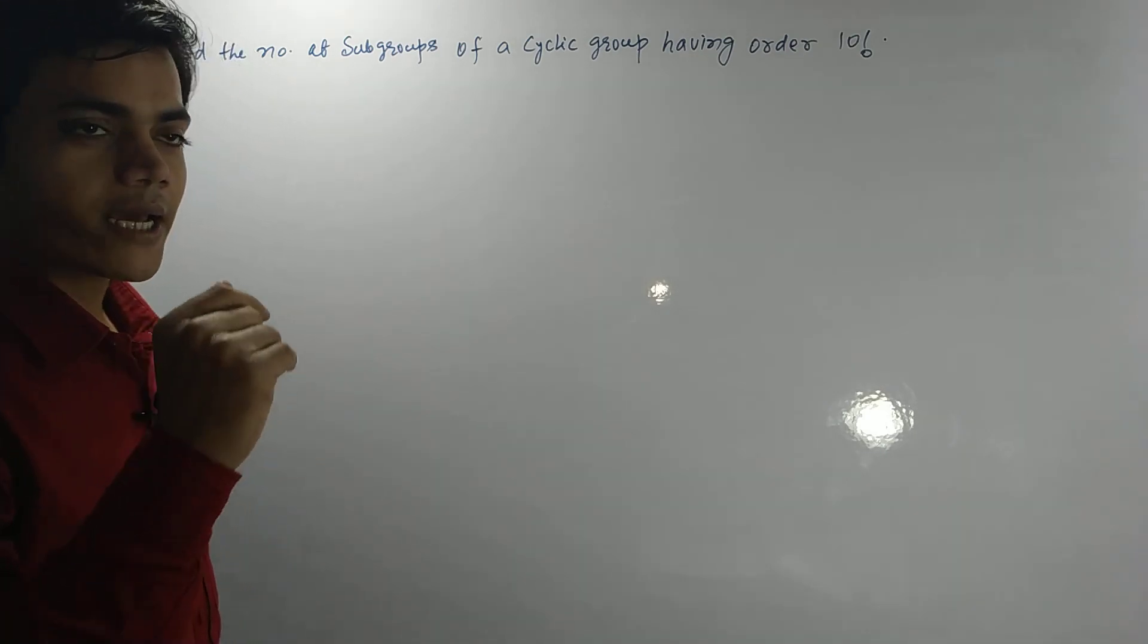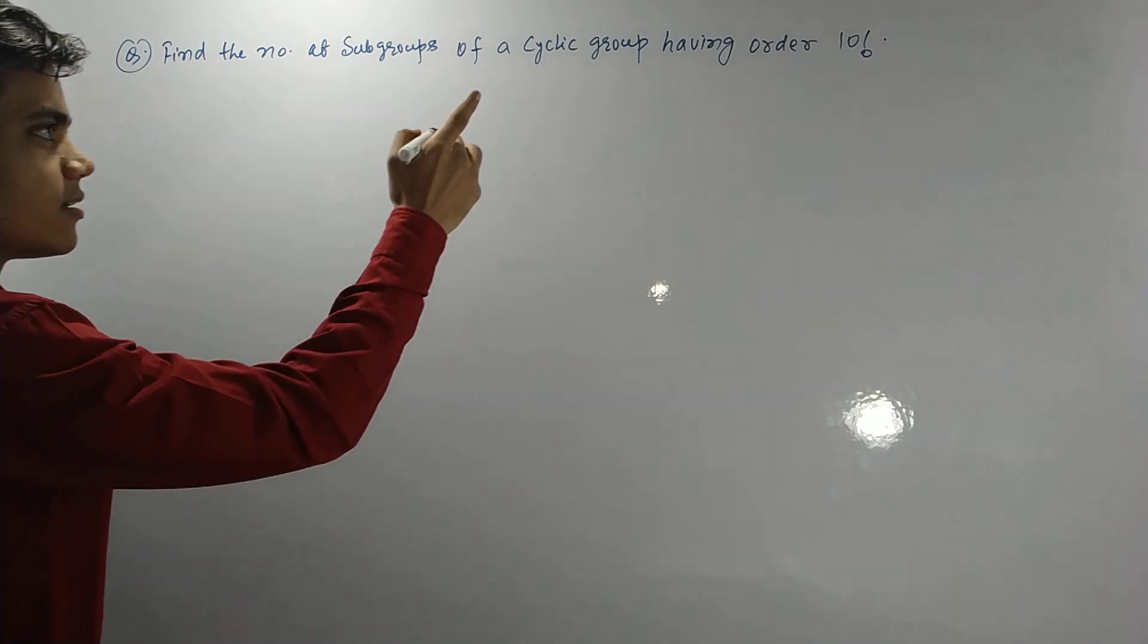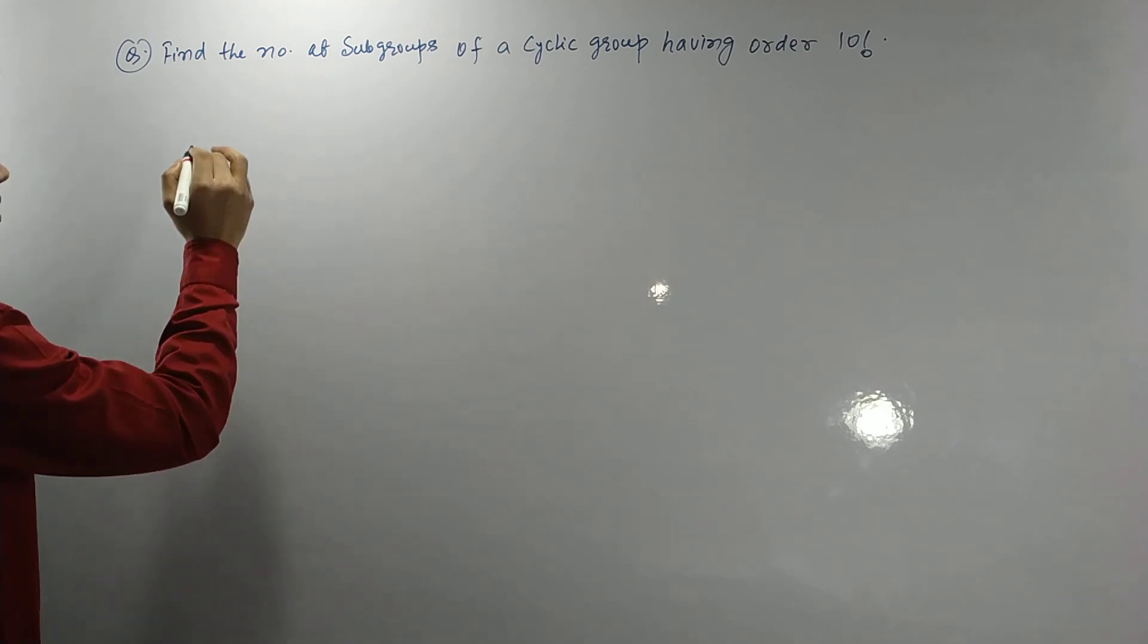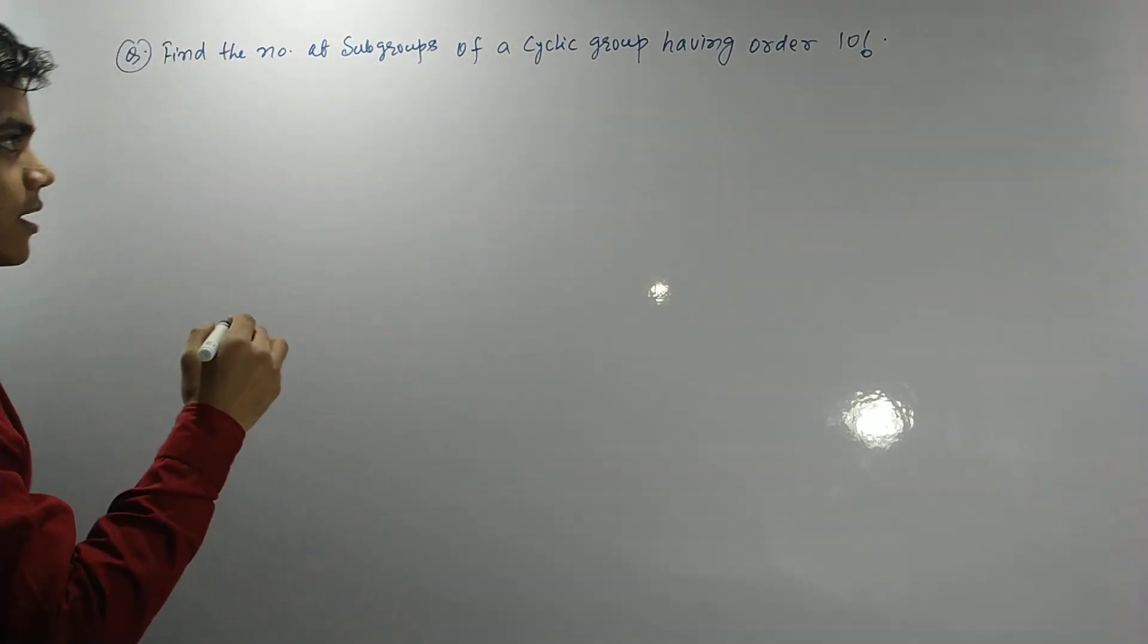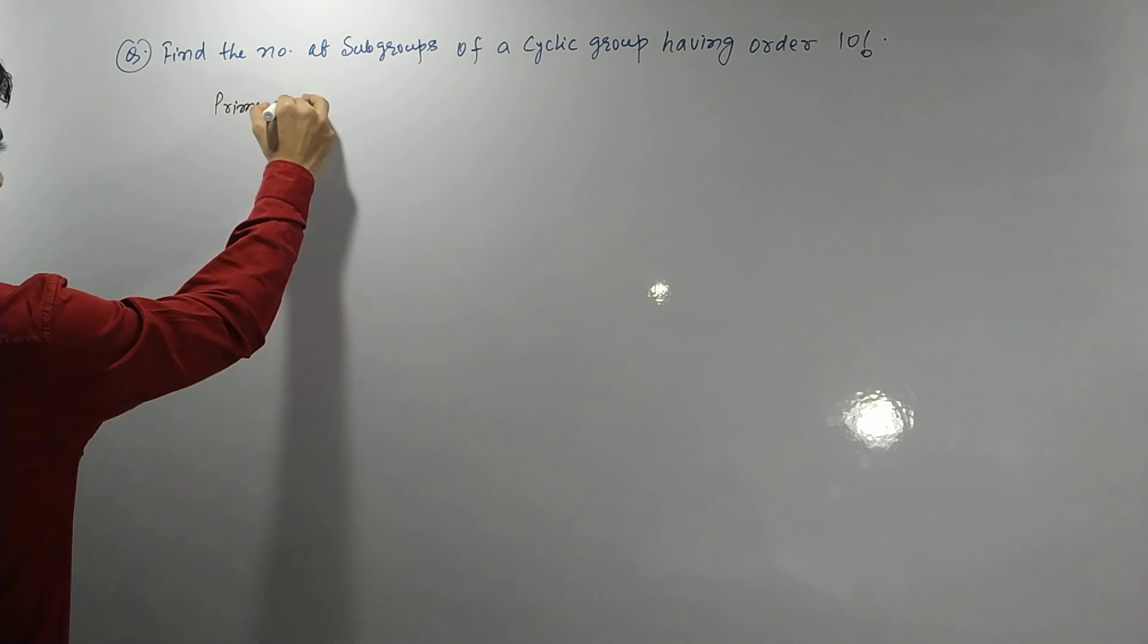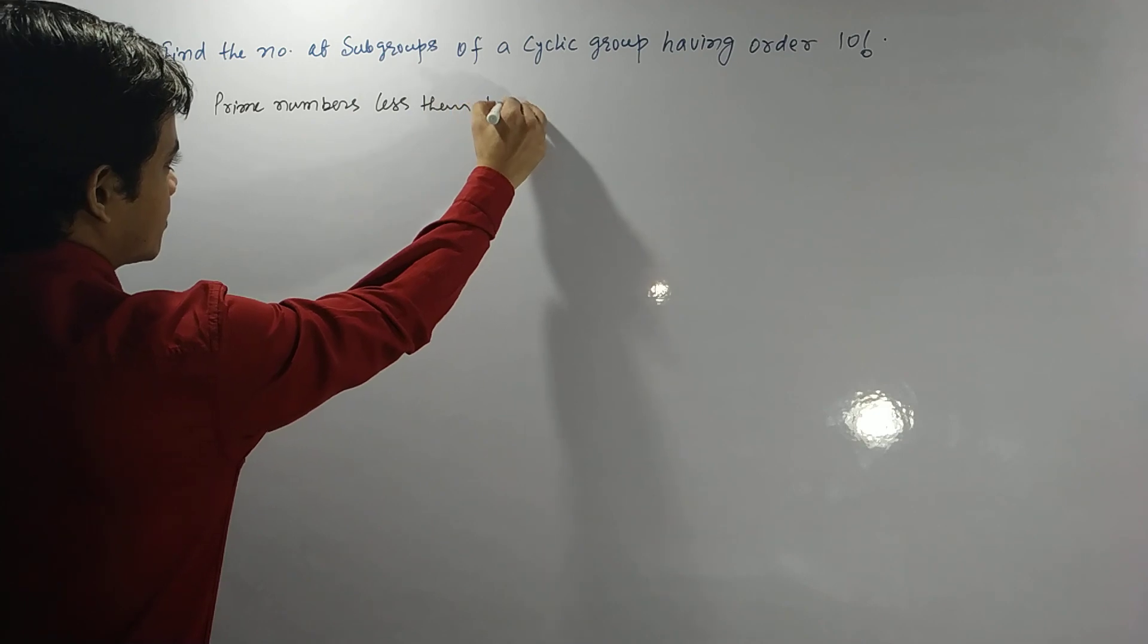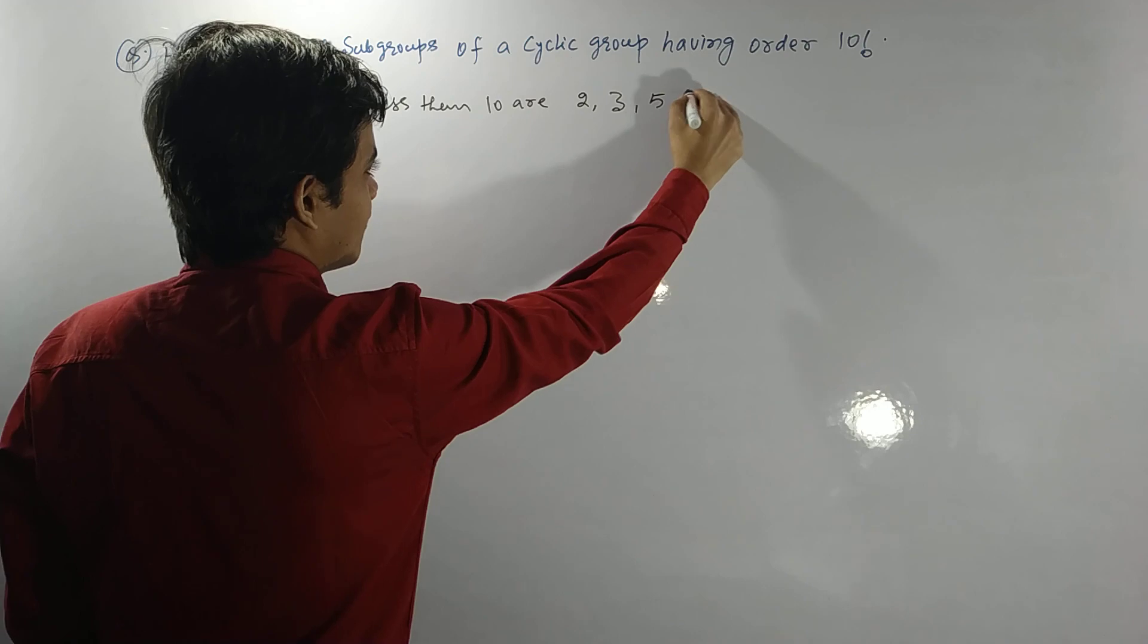First of all, what is the way to write 10 factorial as the product of power of primes? The way is to write this 10 factorial as the product of primes. What are the prime numbers less than 10? Prime numbers less than 10 are 2, 3, 5, and 7.